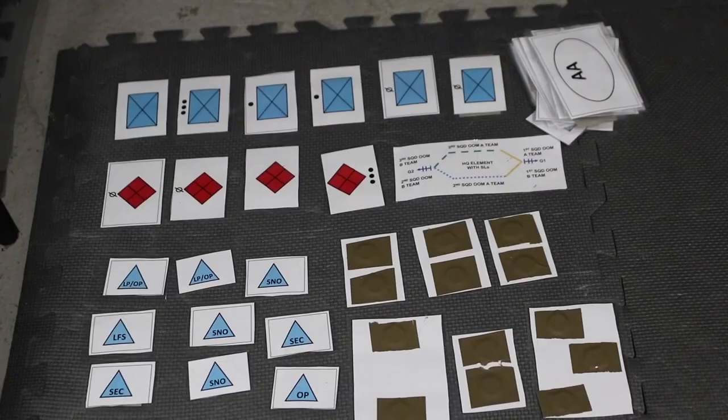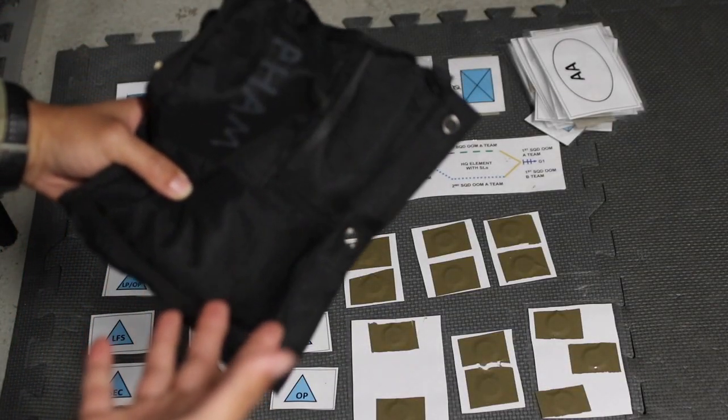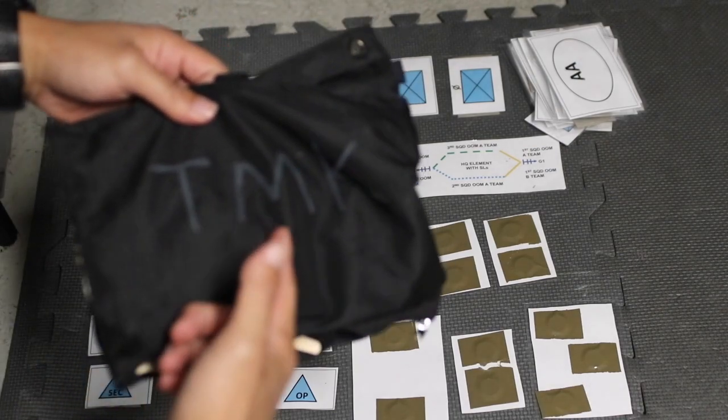To hold all the pieces together I use this pencil case kind of thing. I write my name on the front and on the back I write TMK terrain model kit, so everyone knows what's inside this bag. To put the pieces away I just shove them inside and they should fit pretty easily.